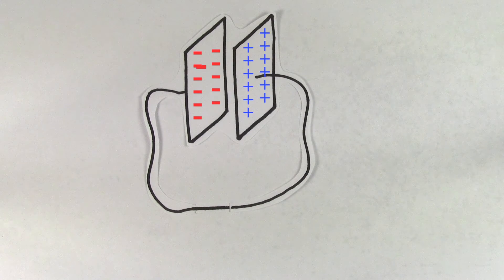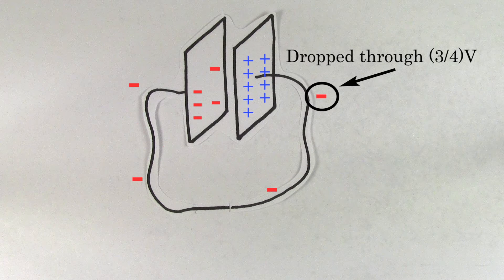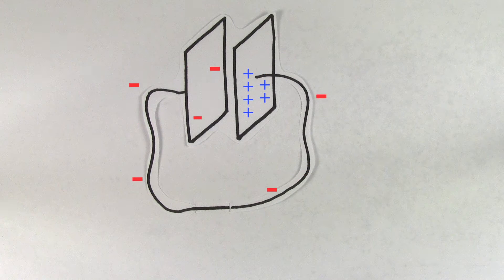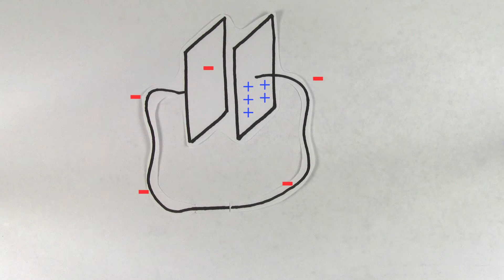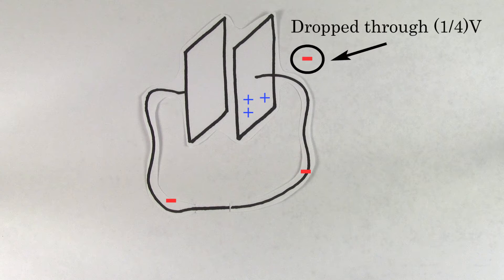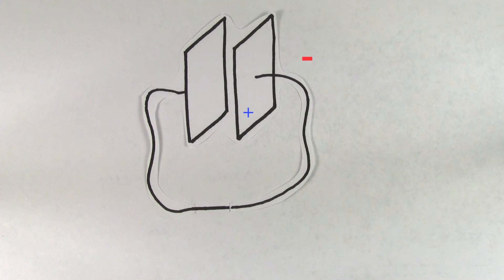As more and more charge gets transferred, there'll be a point where a charge only drops through three-fourths of the initial voltage. Wait longer and there'll come a time when a charge gets transferred through only a half of the initial voltage. Wait even longer and a charge will only get transferred through a fourth of the initial voltage. And the last charge to get transferred drops through almost no voltage at all, because there's basically no charge left stored on the capacitor.